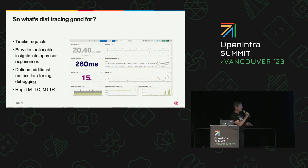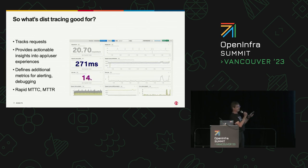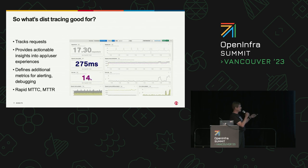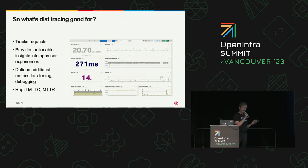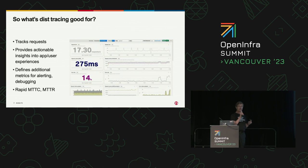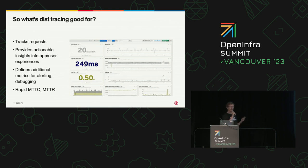So what's distributed tracing good for? What you're looking at here is called a RED monitoring screen — rate, error, duration. It's actually tracking requests as they go through our system. I'm pulling them together and aggregating them in 10-second clumps so I can see what the data is telling me. I'm also using a strip chart to show live information as it comes forward, and I can see what my request times look like. This adds metrics capability to our environment — more metrics from distributed tracing than before. It looks at each individual request as it goes through the system.